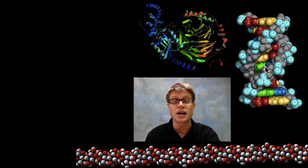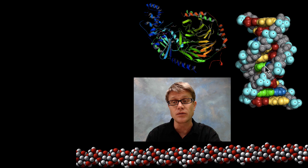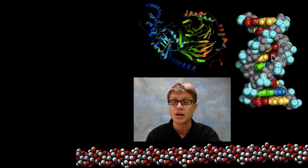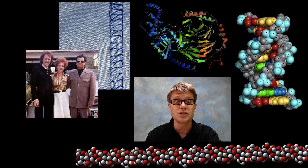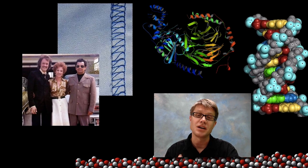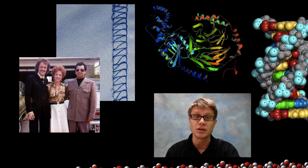This right here is deoxyribonucleic acid, or DNA, and that itself is made up of monomers called nucleotides. Essentially we've got a phosphate, a sugar, and a nitrogenous base. And even that nice leisure suit your dad may have worn in the 70s is going to be a polymer.